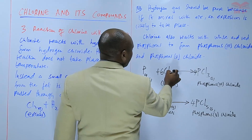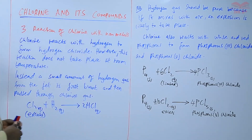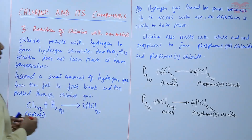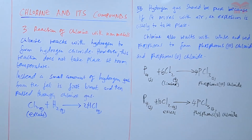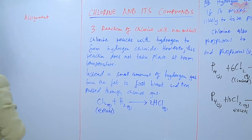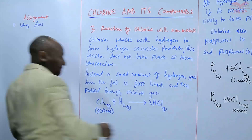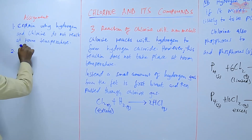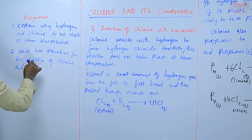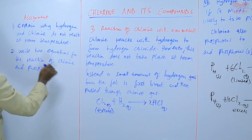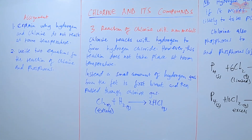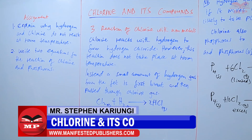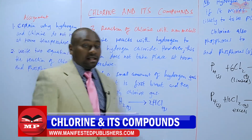Phosphorus is another non-metal, just like hydrogen, that reacts with chlorine. We are going to have an assignment on that. The first question: explain why hydrogen and chlorine do not react at room temperature. Number two: write two equations for the reaction of chlorine and phosphorus. We'll stop there until next time. Goodbye.